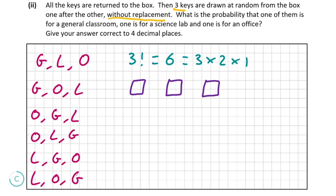To understand why factorial gives the number of orderings: with 3 objects and 3 boxes, there are 3 choices for the first box, 2 for the second (one already placed), and 1 for the third. Multiplying gives 3 × 2 × 1 = 3!. For 5 objects it would be 5!, for 10 it would be 10!, and so on.